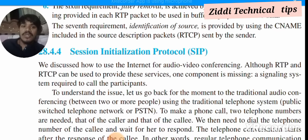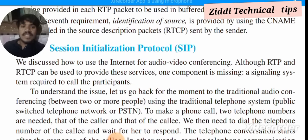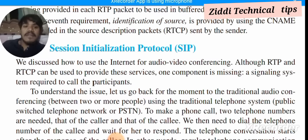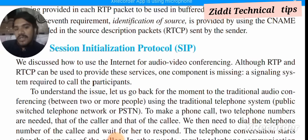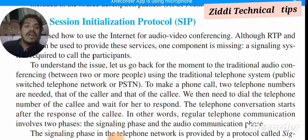To understand the issue, let us go back for a moment to the traditional audio conferencing between two or more people using the traditional telephone system — the Public Switched Telephone Network, or PSTN. To make a phone call, two telephone numbers are needed: that of the caller and that of the callee. We then dial the telephone number of the callee and wait for her to respond.